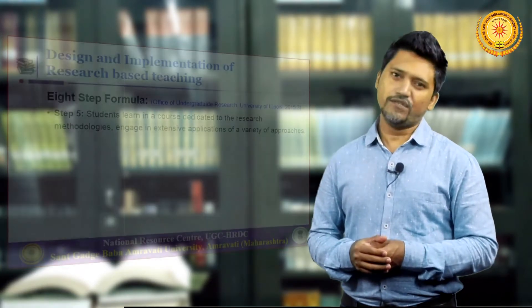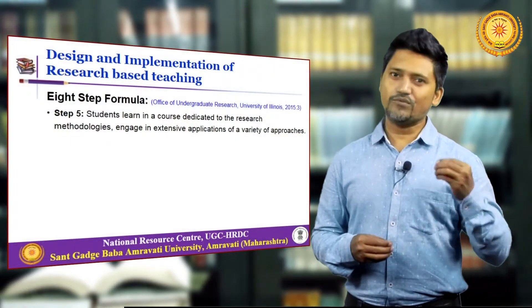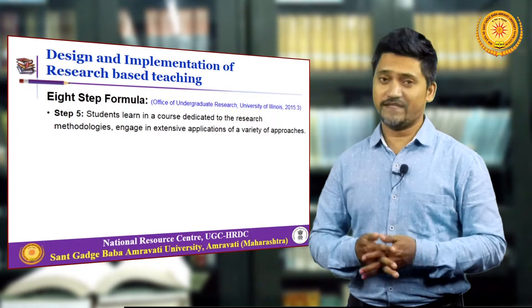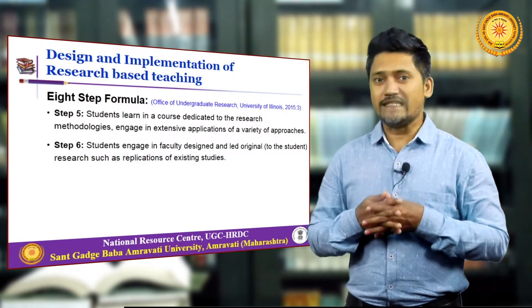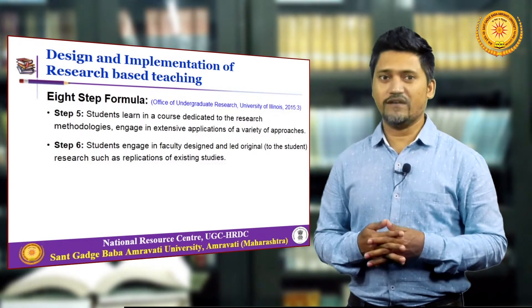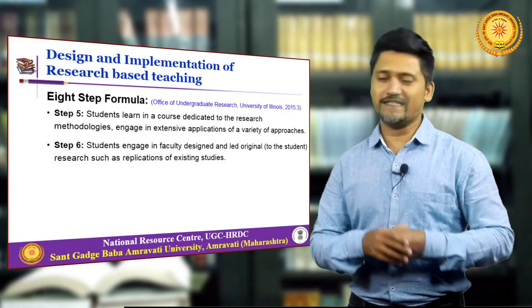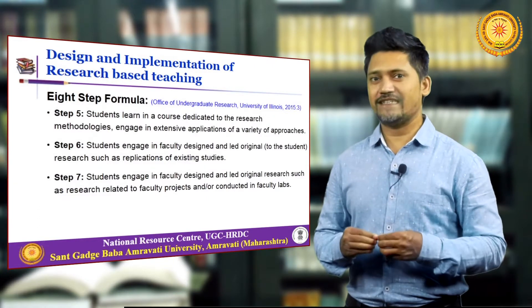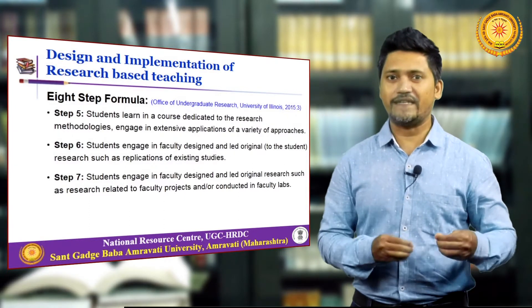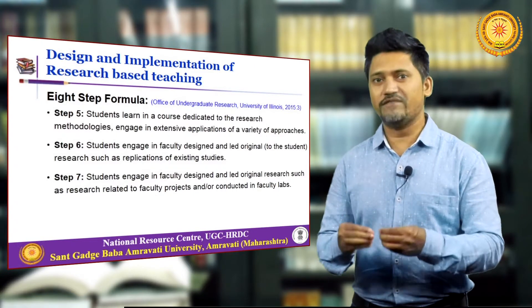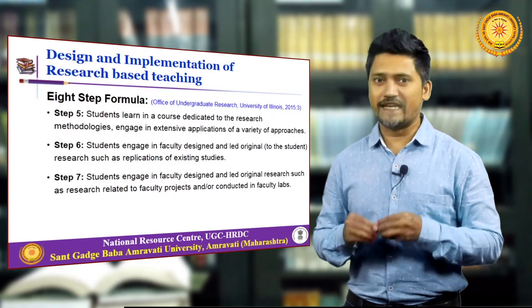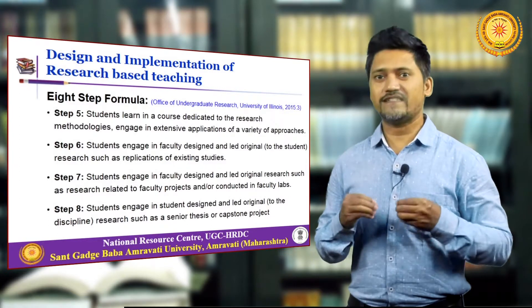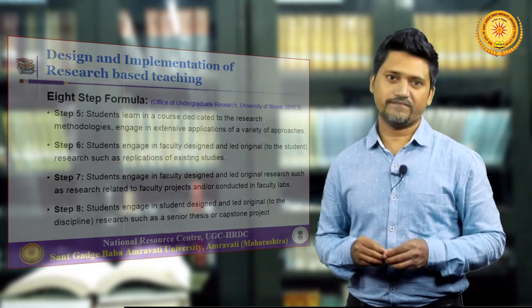Step five: students learn in a course dedicated to research methodologies and engage in extensive applications of a variety of approaches. Step six: students engage in extensive applications of a variety of approaches. Step seven: students engage in faculty-designed and led original research, such as replications of existing studies or research related to faculty projects conducted in faculty labs. Step eight: students engage in student-designed and led original research, such as a senior thesis or capstone project.